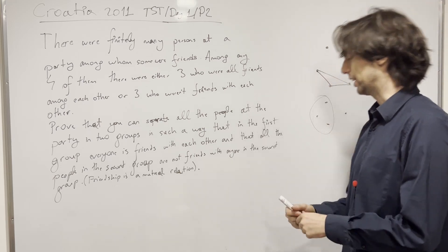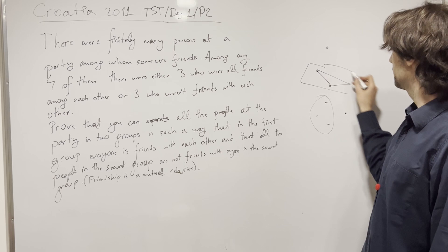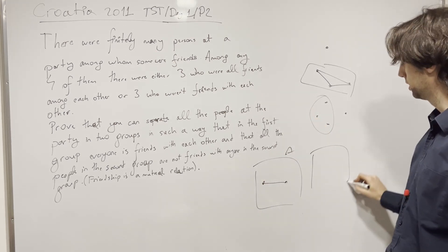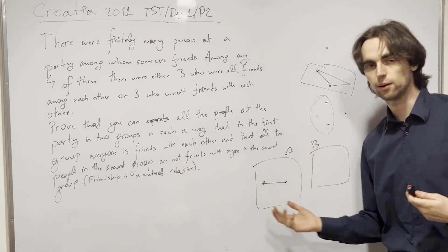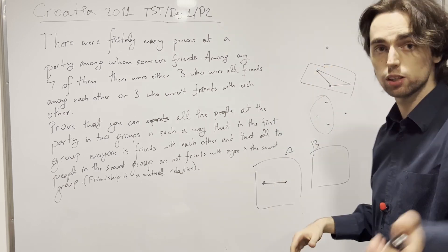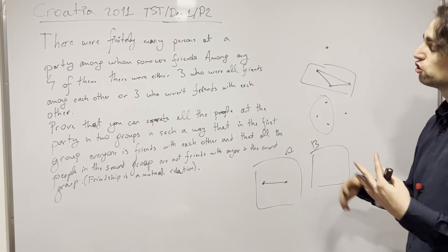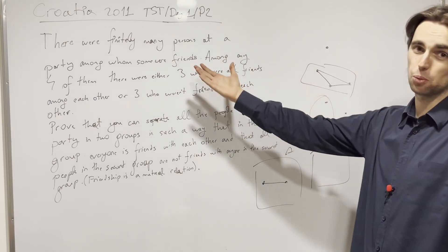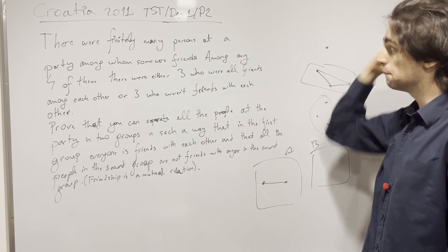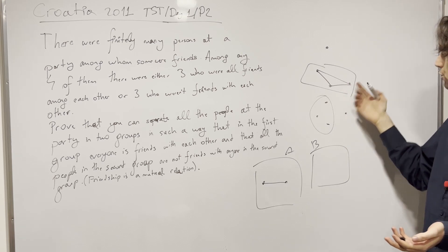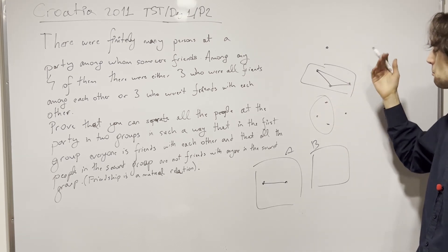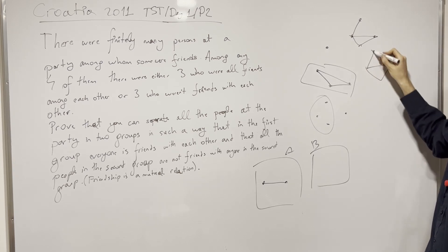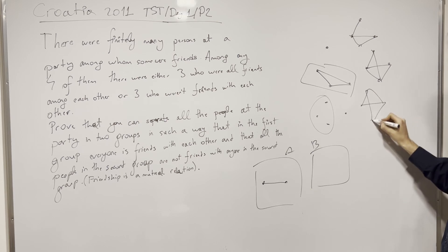Let's see. If somebody is friends with somebody else, there are 2 people that can be in group A and group B. The thinking here is not just to play around with small cases on the number of people, though that is certainly something we can do. I want to go out with a more general approach. With 4 people, you can have a triangle, nobody friends with anybody, or everybody friends with everybody.